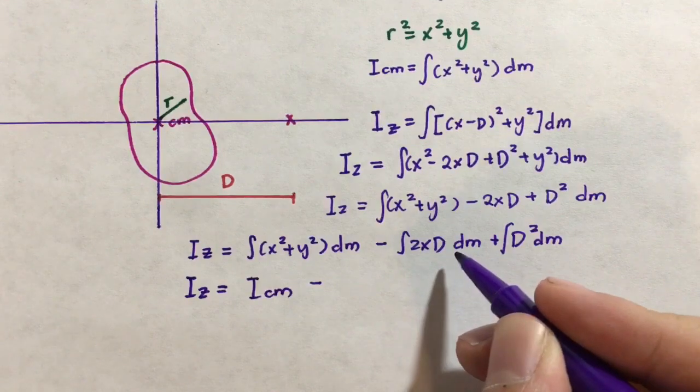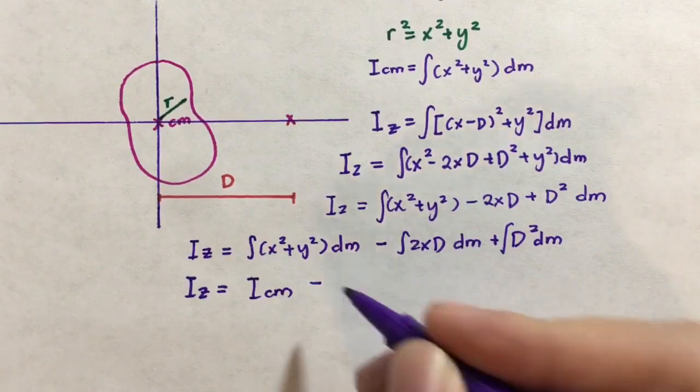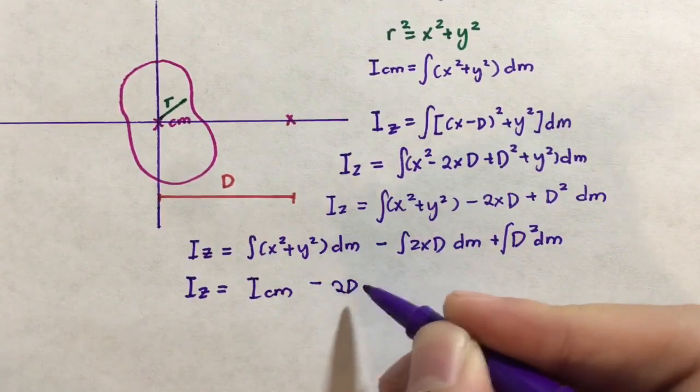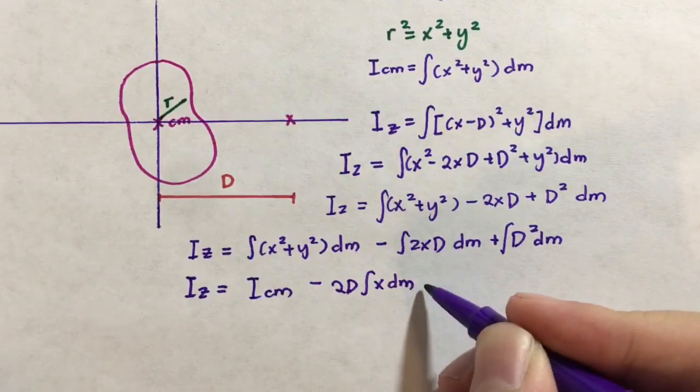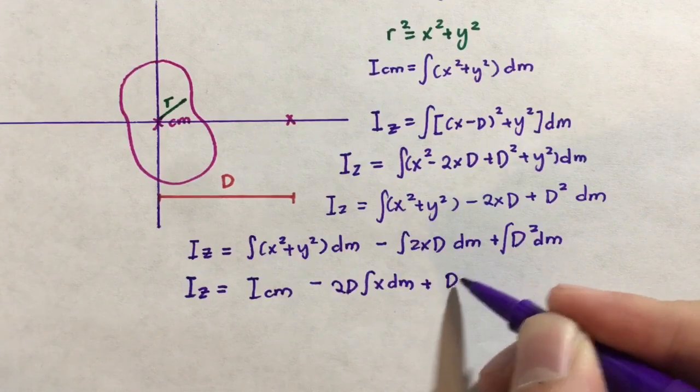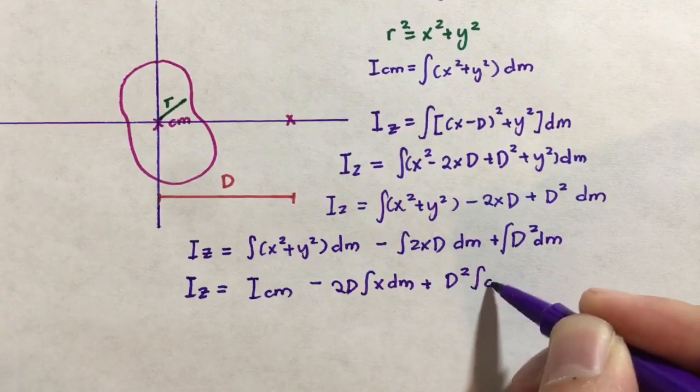Next, we can pull out any constants that we see in these integrals. So in here, we can pull out the 2 and the d, and what's left is the integral of xdm. Here, same thing, we can pull out the d-squared, so we get the integral of d-squared times the integral of dm.